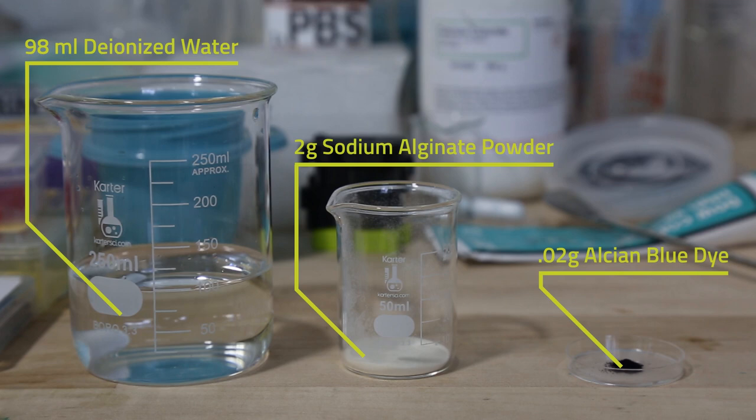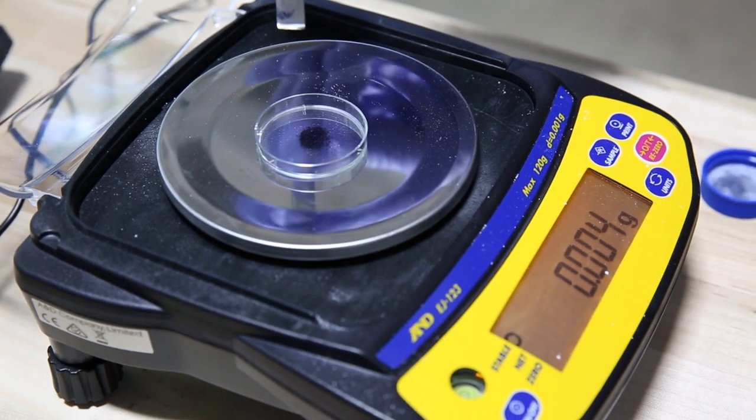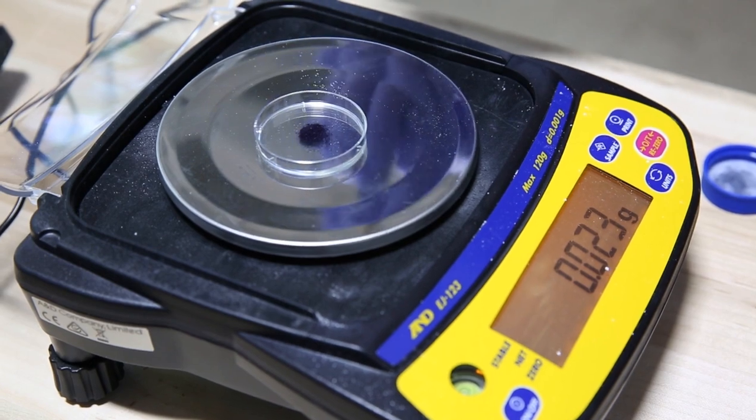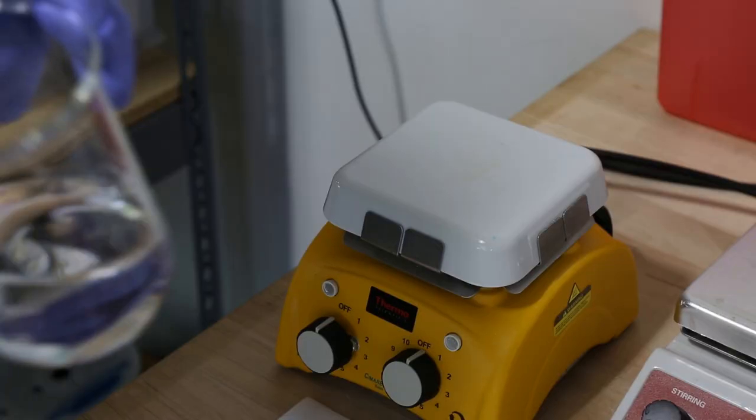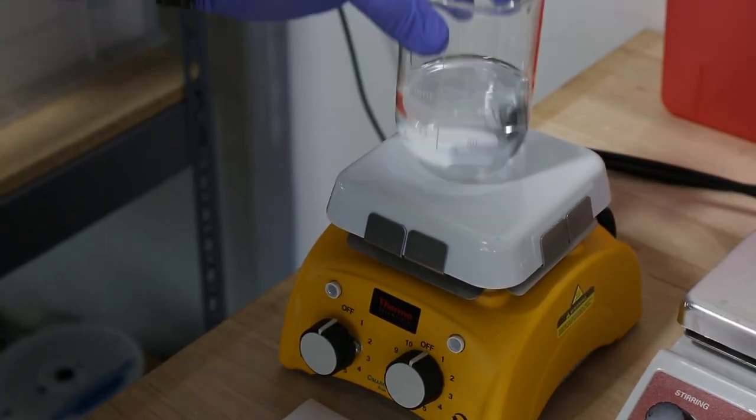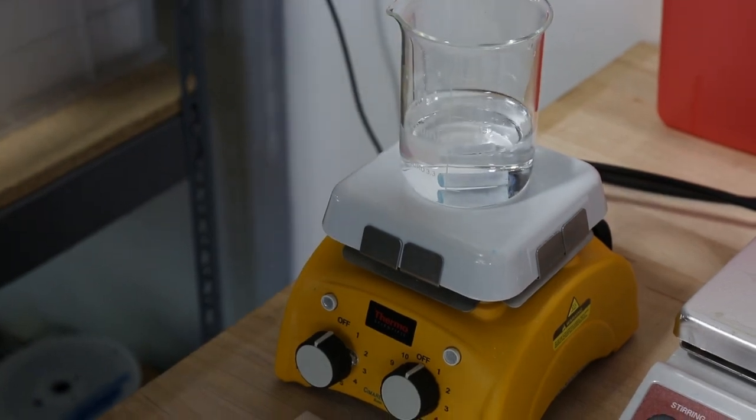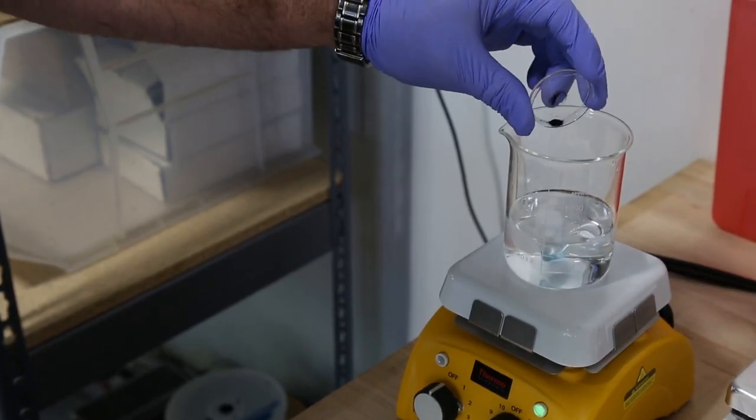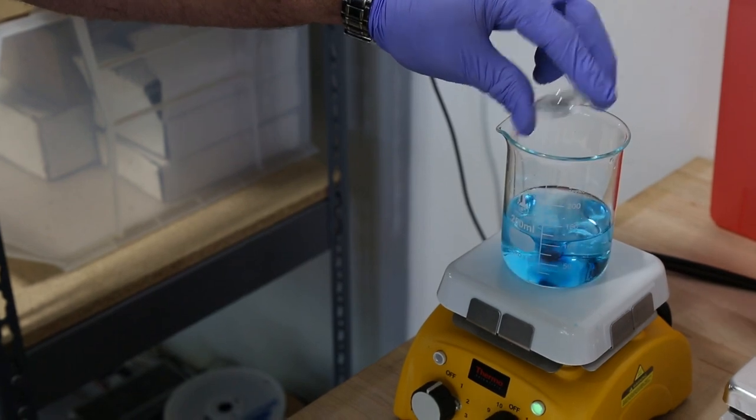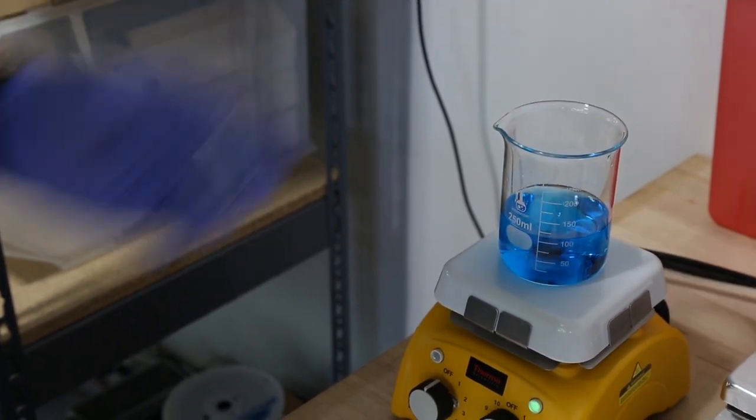The dye is because the sodium alginate is clear so we want to be able to see the print when it's printing. So we've got our 98 milliliters of deionized water with a magnetic stirrer. Then we're gonna add our 0.02 grams of Alcyon blue dye and this stuff is gonna make it really blue really fast.